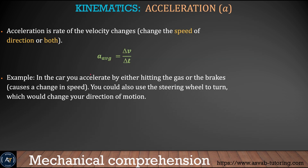The next thing we learn is acceleration. We learned velocity, and now we learn acceleration. Acceleration is change in velocity over time. When you start your car you speed up, and then after a certain point you start going like 60 or 70 miles an hour. At that point the speed is constant and the acceleration is zero. Constant speed means acceleration is zero.